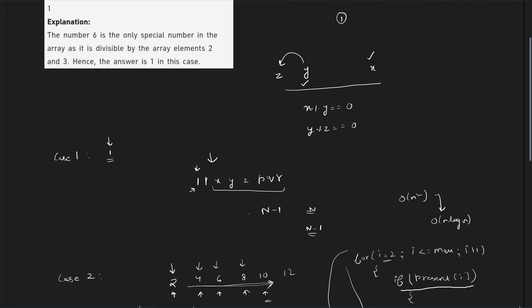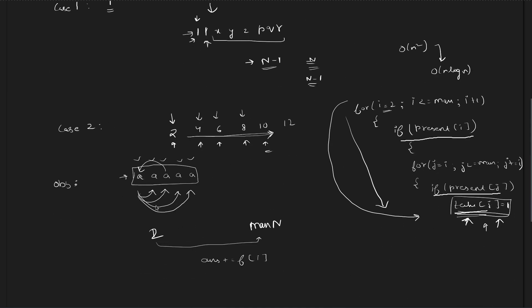But there is no other number to divide 1, so if there exists another 1 in the array the answer will be n because now we have a divisor for the first 1 as well. Coming to the general case: if a number is present multiple times, all of them are special. For elements with frequency 1, we start a loop from 2, and if the element is present, we mark all its multiples.